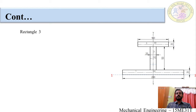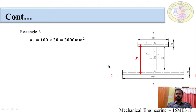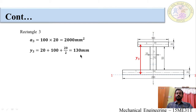Now move on to the third rectangle. Find the area: 100 × 20 = 2000 mm². The distance y3 from the reference axis to the center of gravity of the third rectangle is calculated as 20 + 100 + 20 ÷ 2, which equals 130 millimeters.